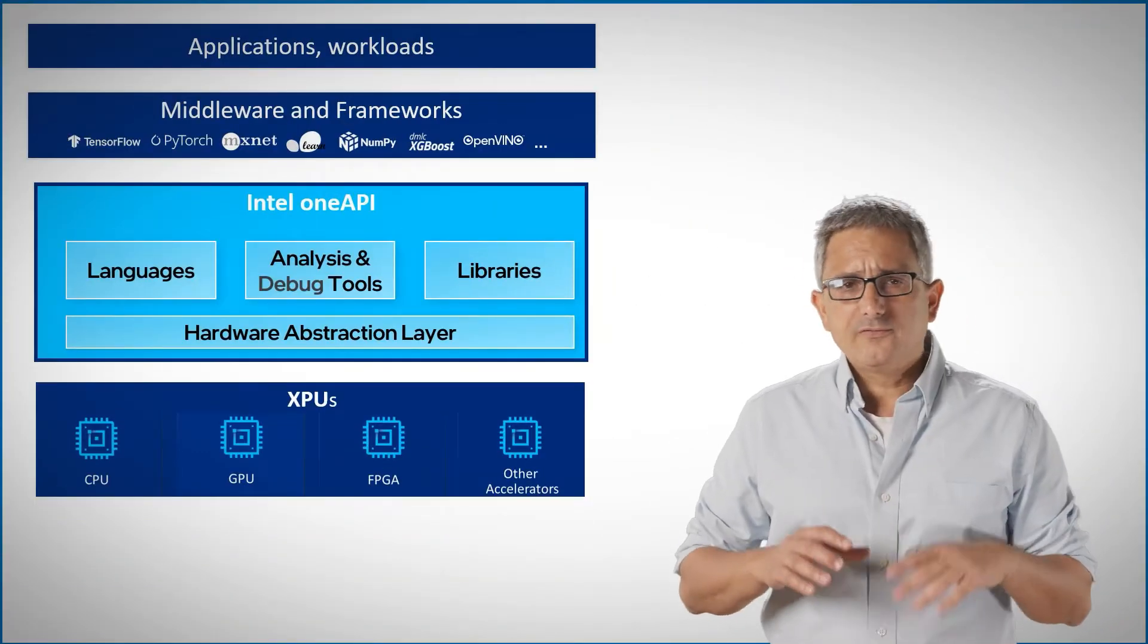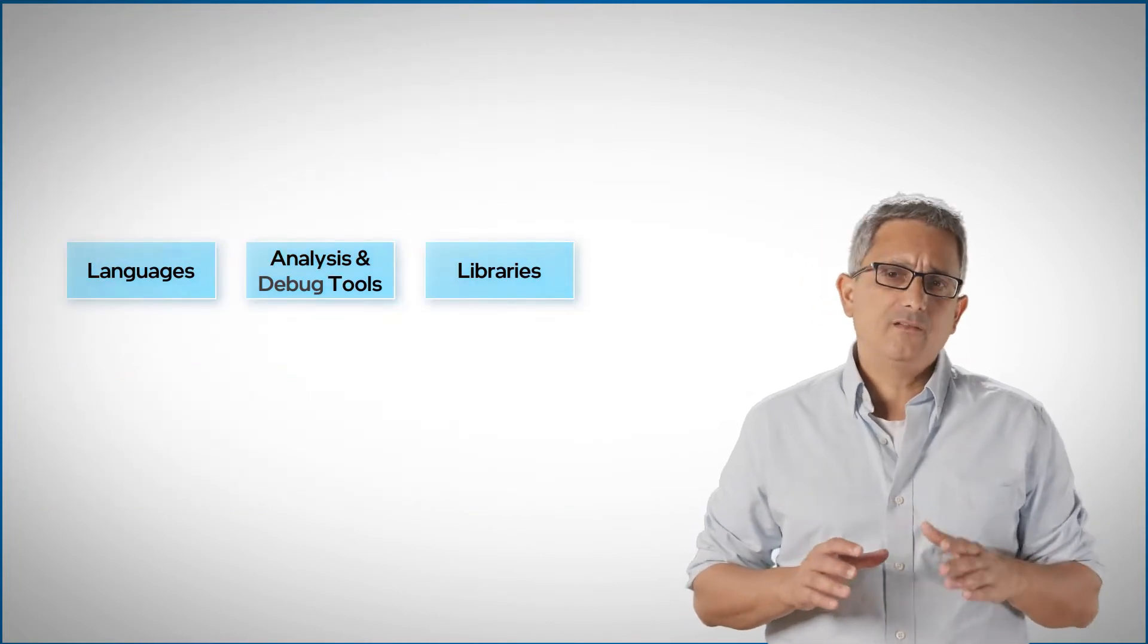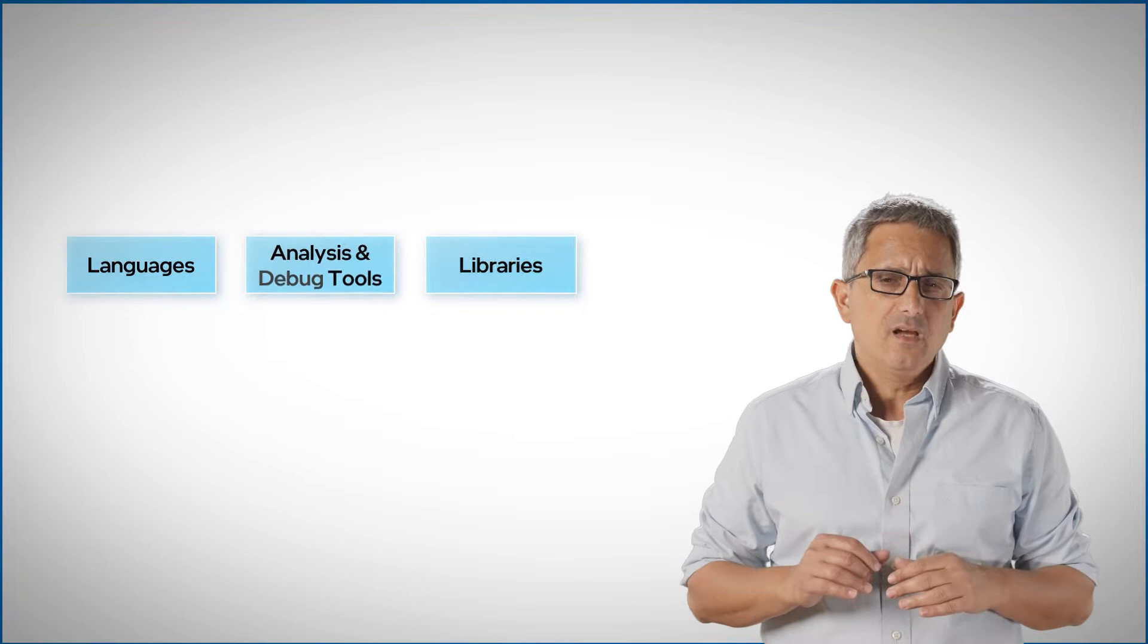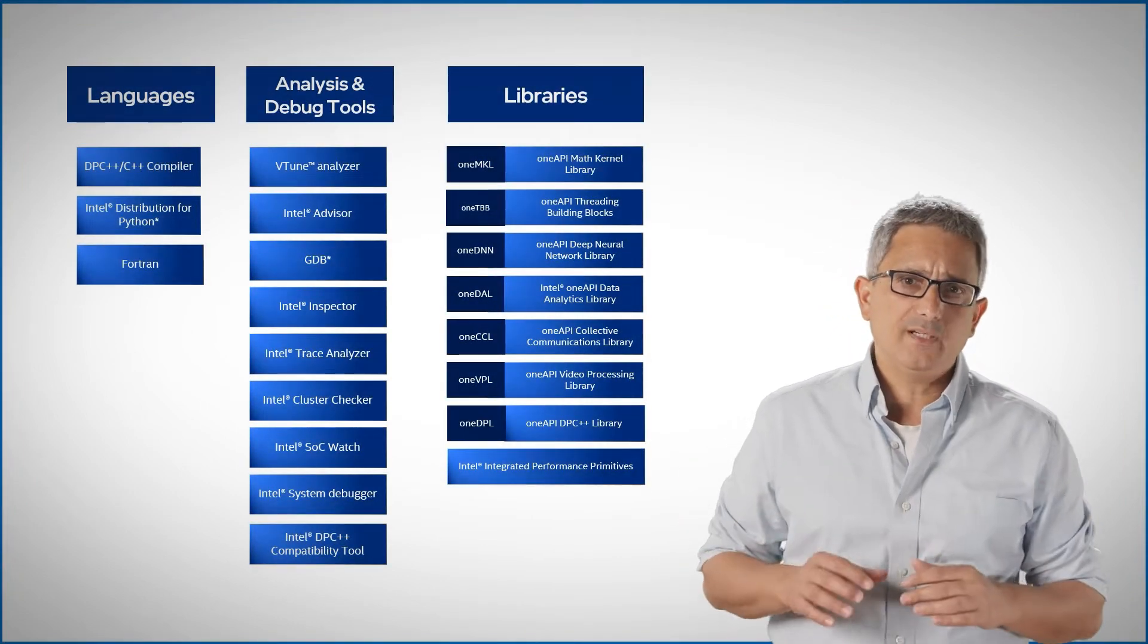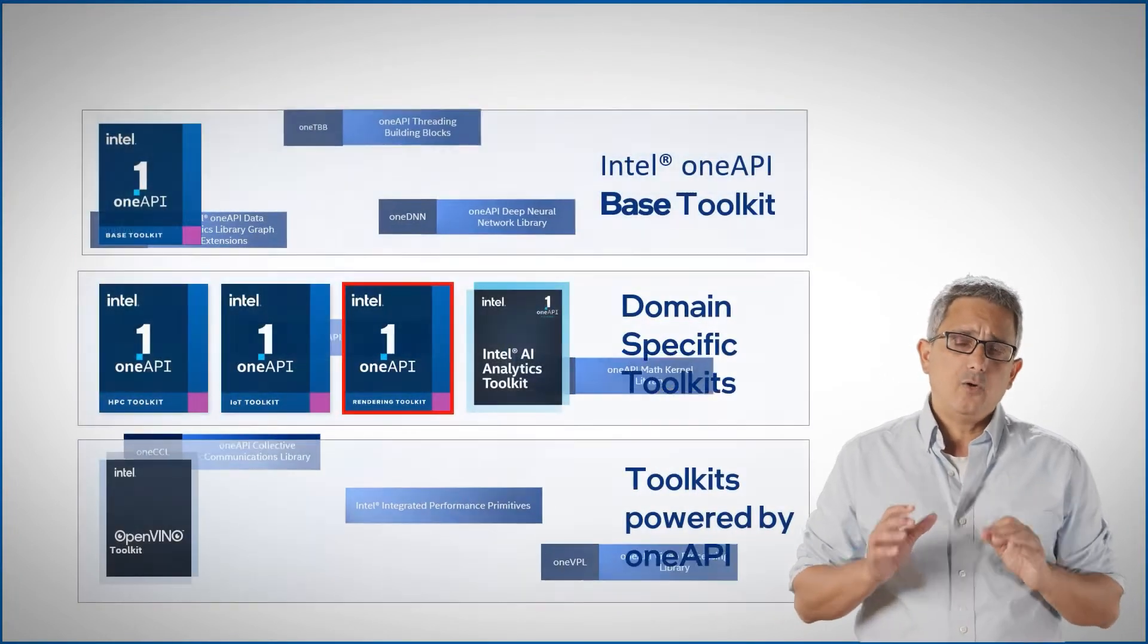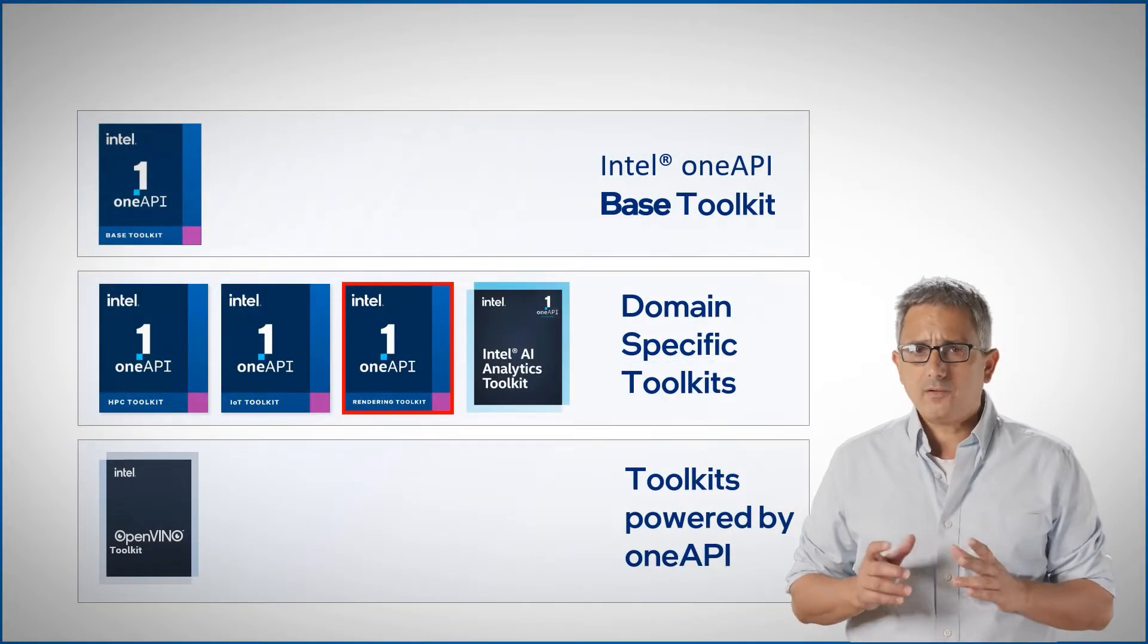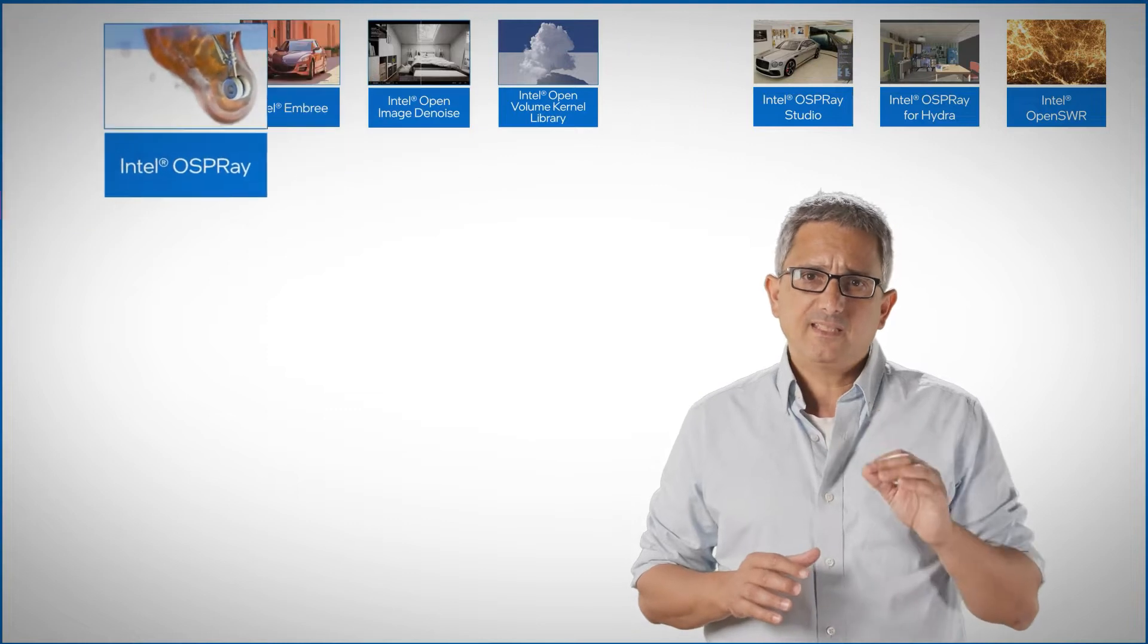In previous videos we've talked about the OneAPI components. We mentioned the multi-device, multi-vendor and open spec libraries that can now work on multiple devices: CPU, GPU, and others, what we call XPUs, and are arranged into toolkits. One of them is the OneAPI rendering toolkit that has many components, one of them is Intel OSPRay.